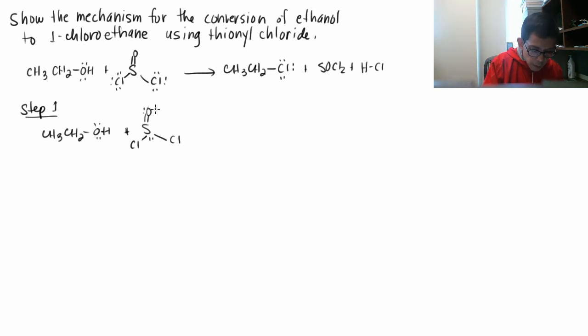So the first step is one of the lone pairs on the oxygen, alcohol oxygen attacks the sulfur and what happens is that bond, that second bond between sulfur and oxygen goes to oxygen as a third lone pair.